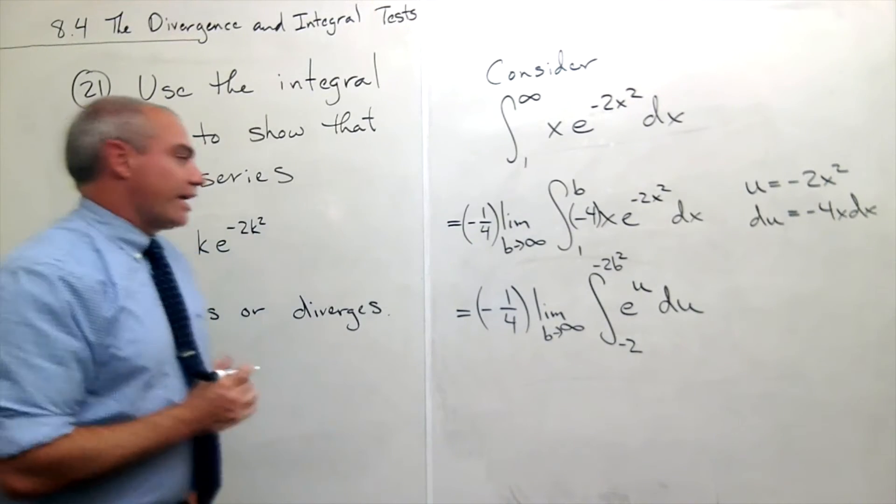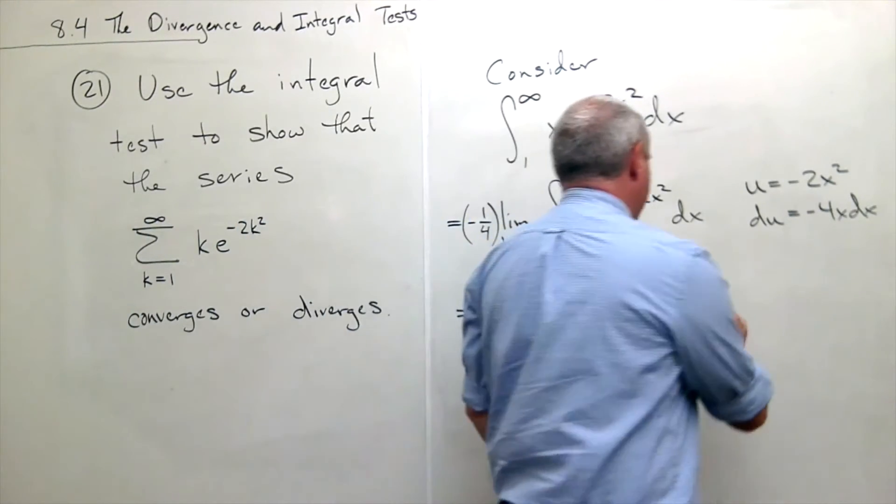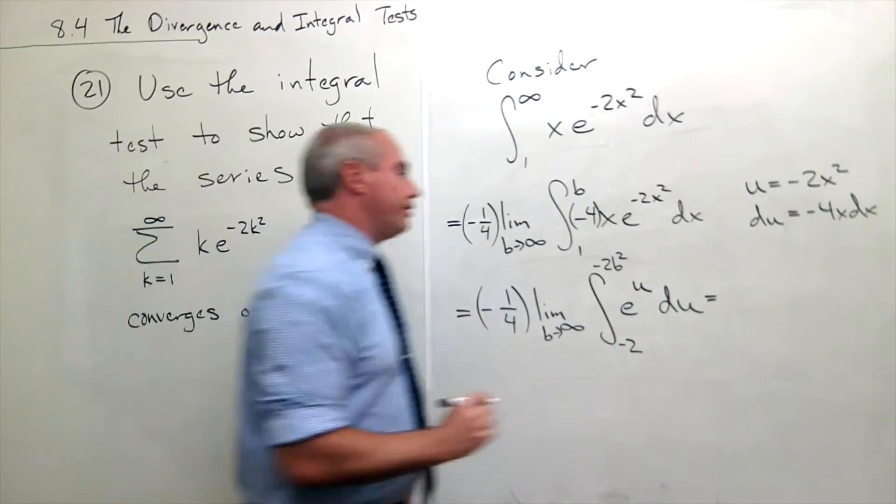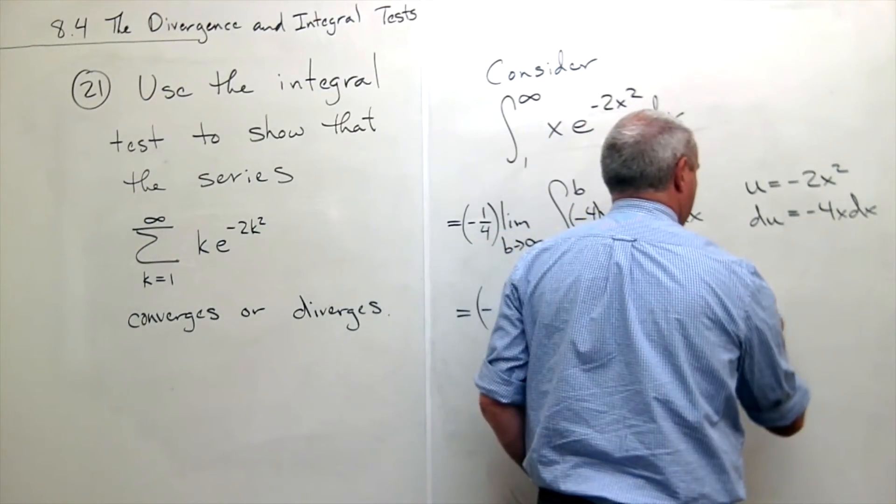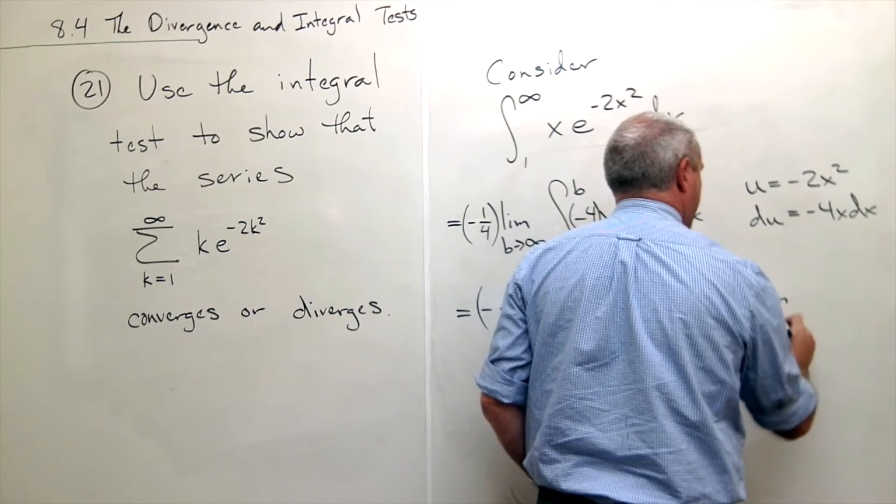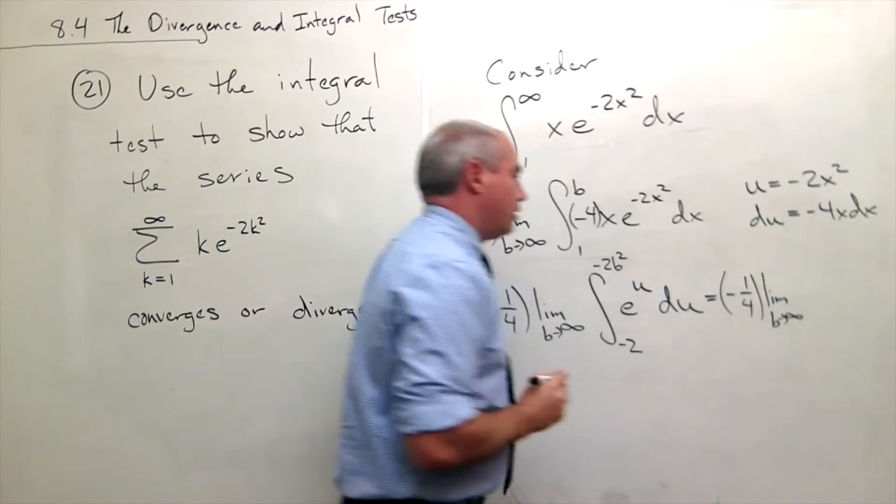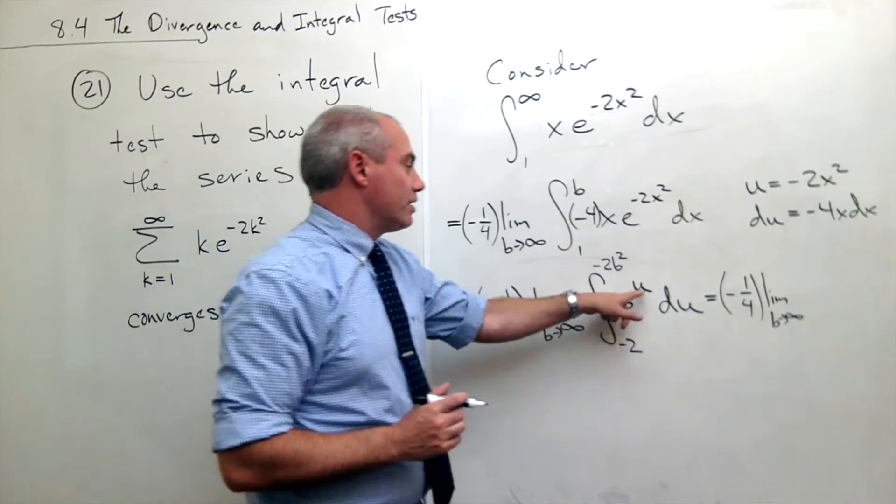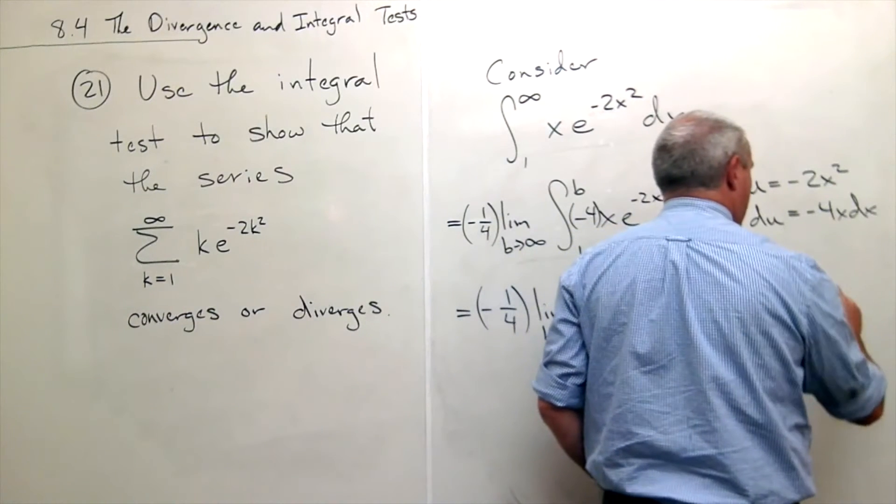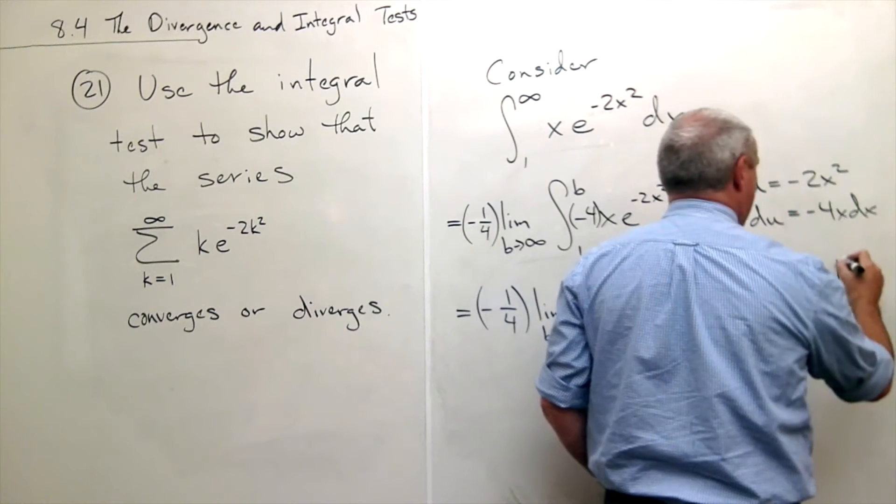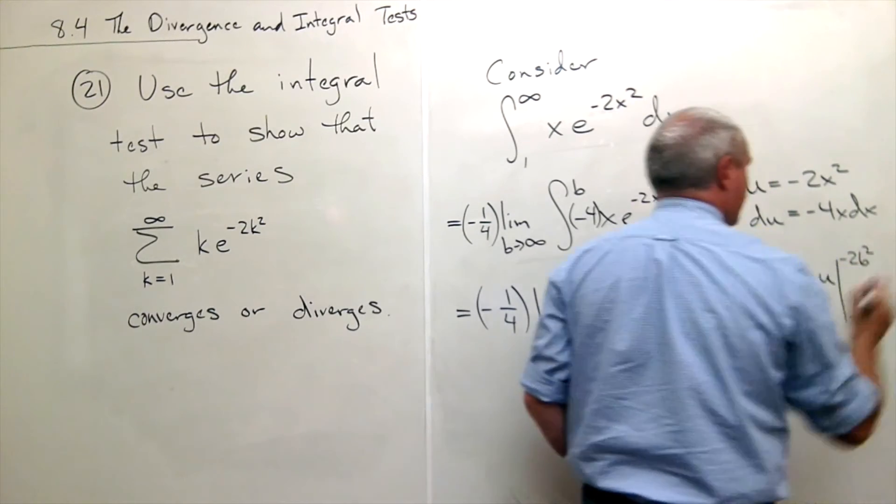Now I'm ready to take an anti-derivative, which is fairly trivial. So I get minus 1 fourth, limit as b goes to infinity. If I take the anti-derivative of e to the u I just get e to the u evaluated from minus 2 to negative 2b squared.